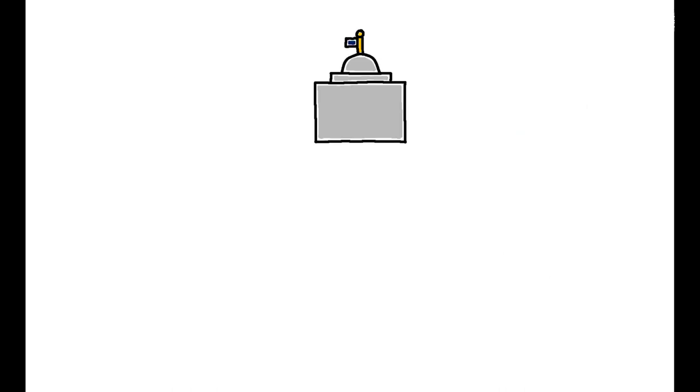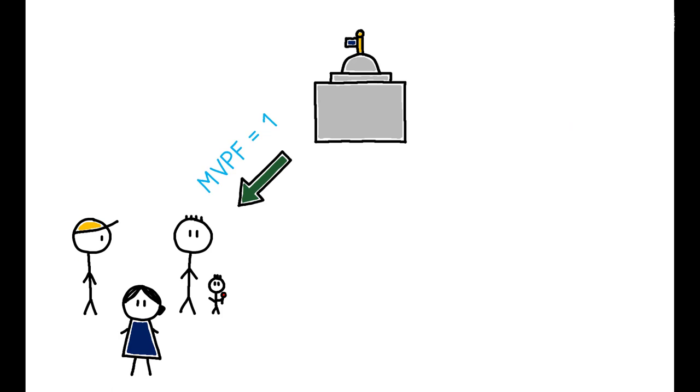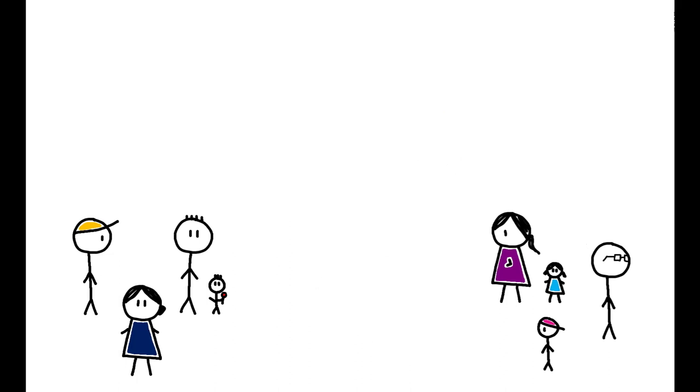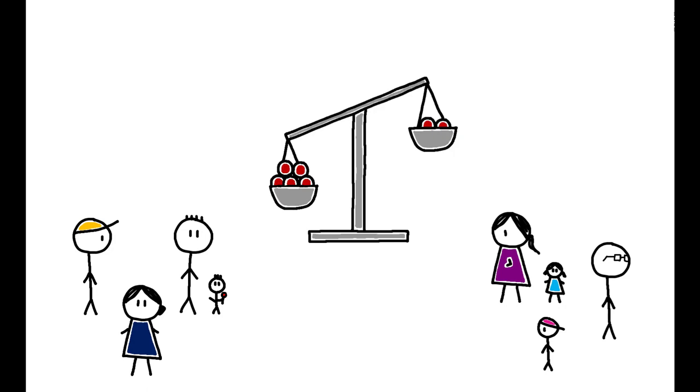If one policy has an MVPF of 1 while another has an MVPF of 2, the government prefers spending on policy 2 if and only if providing $2 to this group is valued more than providing $1 to this group. In other words, the optimal policy choice depends on how we weight the welfare of these two groups.